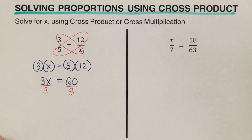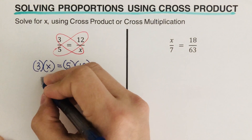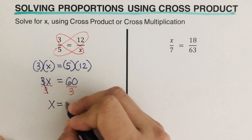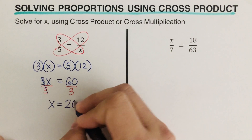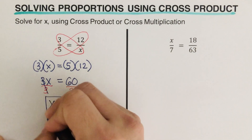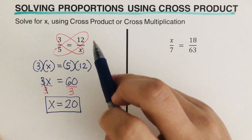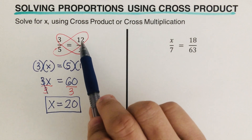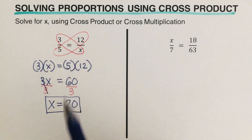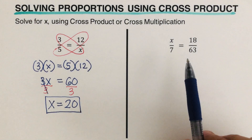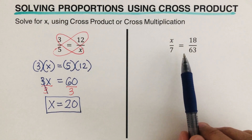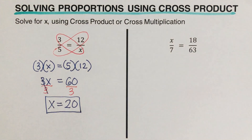We cross the three out and we're left with x is equal to 20. So the value of x is 20. At this time I would encourage you to pause this video and try this problem out on your own, and when you're done unpause it and check your answer.